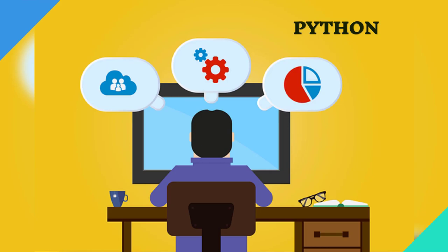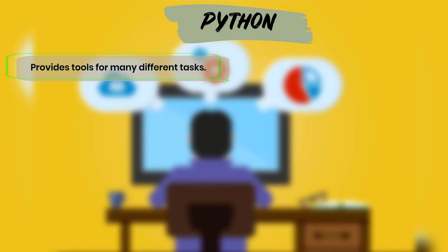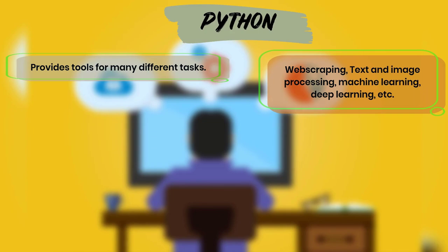One of the great things about Python is that it provides tools suited for many different tasks. If you're not sure what kind of problems you'll want to solve, the safest decision is to go with Python, because you can do web scraping, text processing, image processing, machine learning, deep learning, and data analytics. Between about 70–85% of data professionals use Python in surveys, and about 70–80% of data science job postings on Glassdoor want you to know Python.